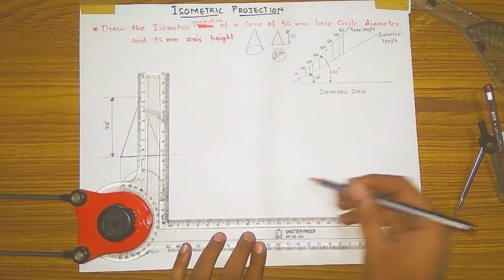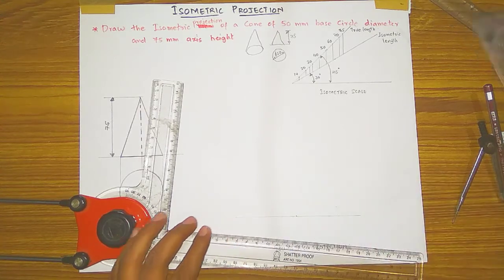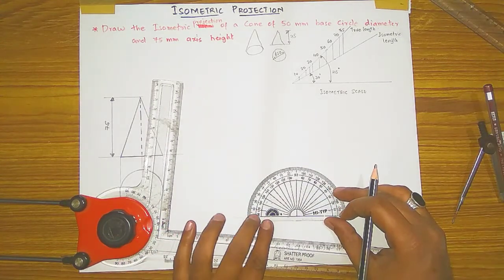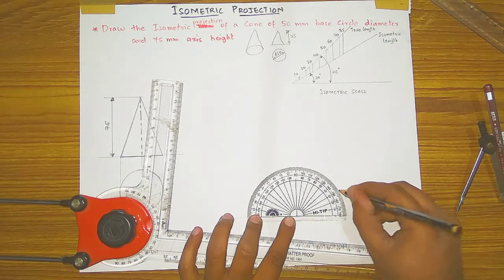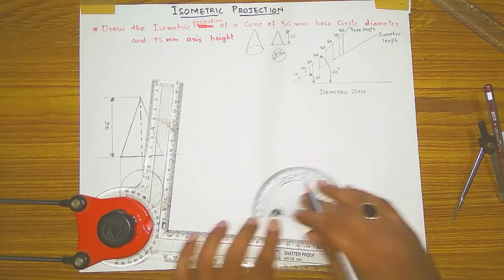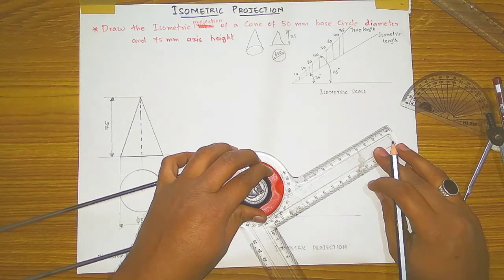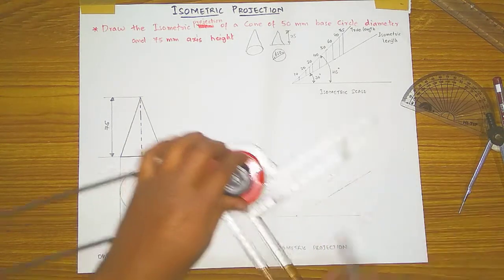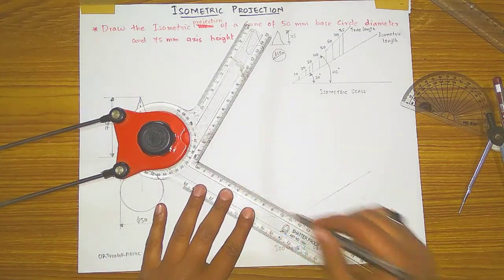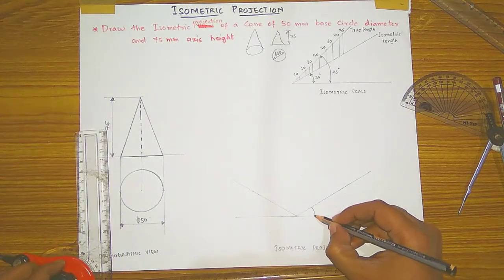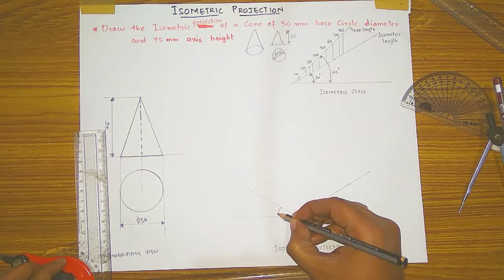To draw the isometric scale, draw a normal imaginary line, take a point, and place your protractor correctly. From that point, take a 30-degree angle on one side and from the same point take a 30-degree angle on the other side. This sets up your isometric axes.